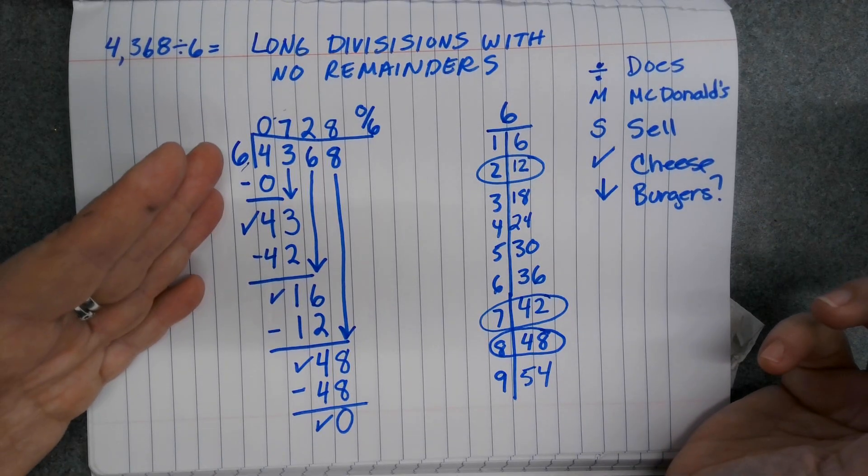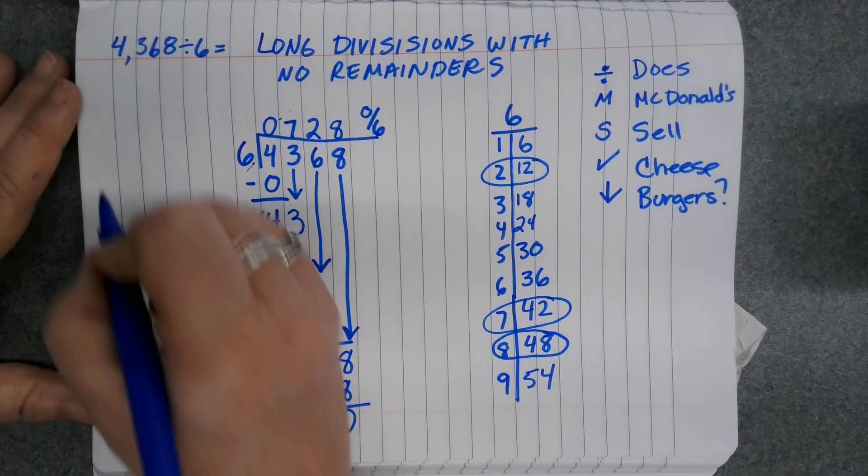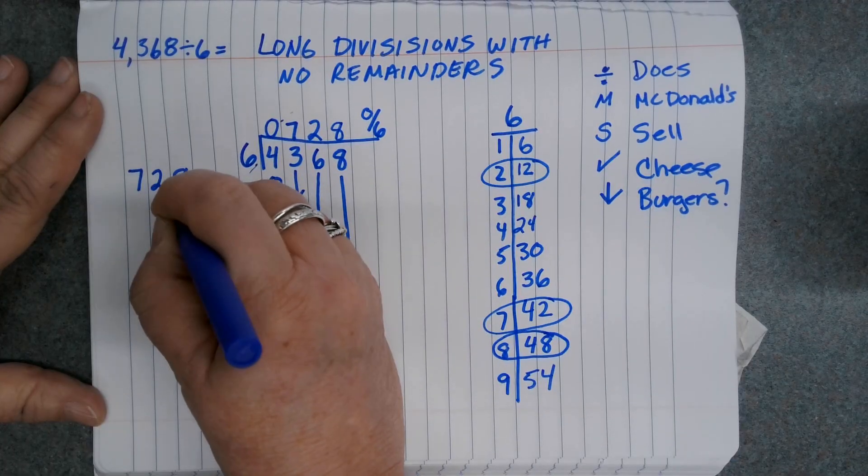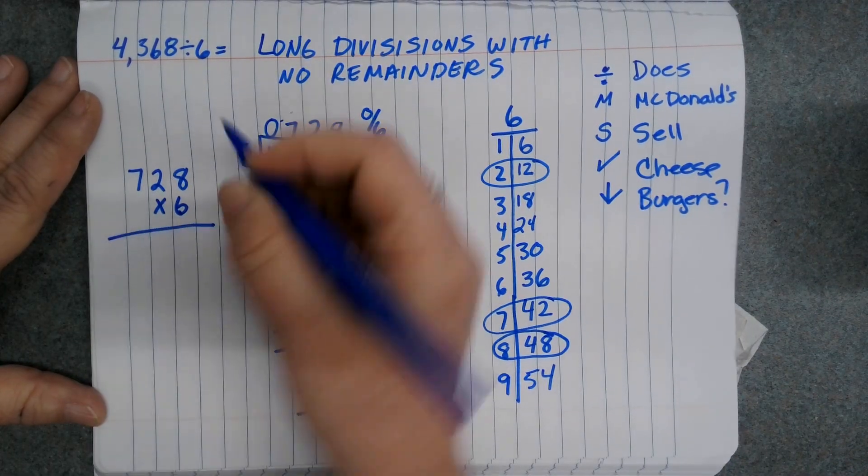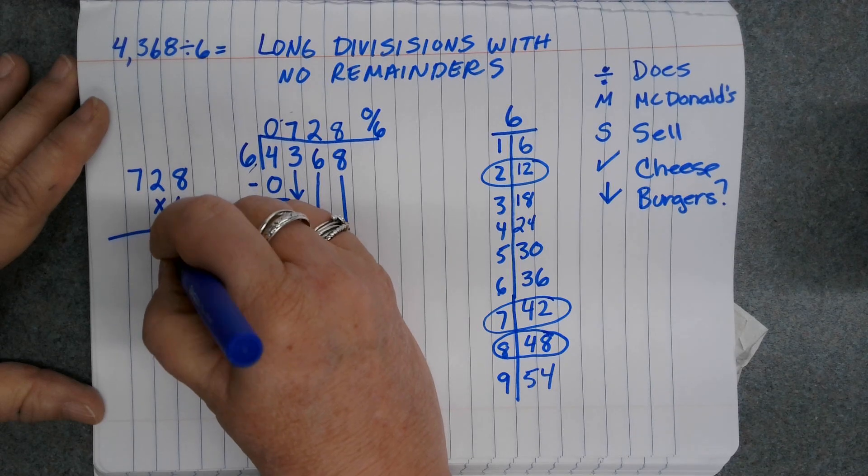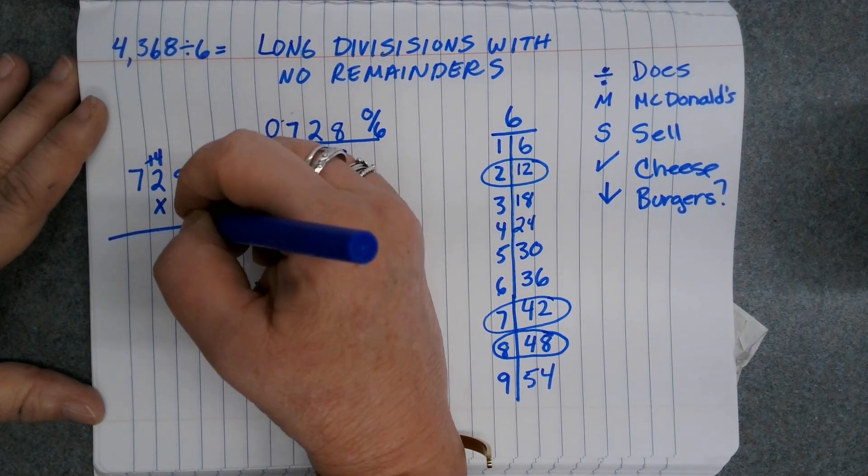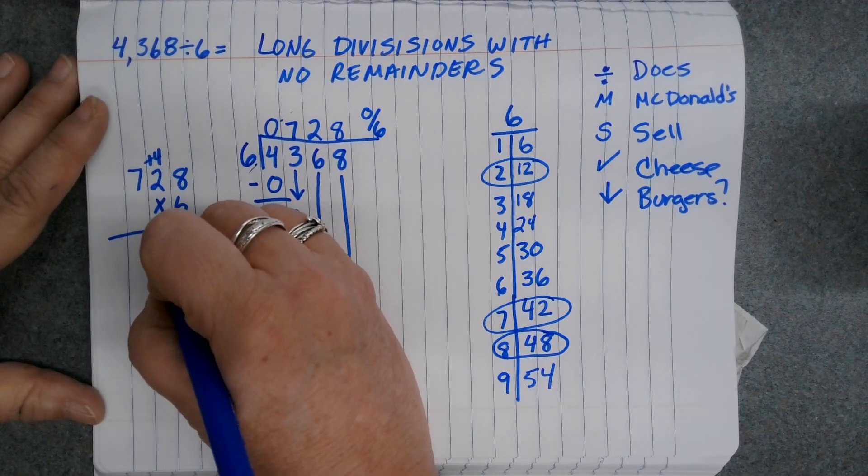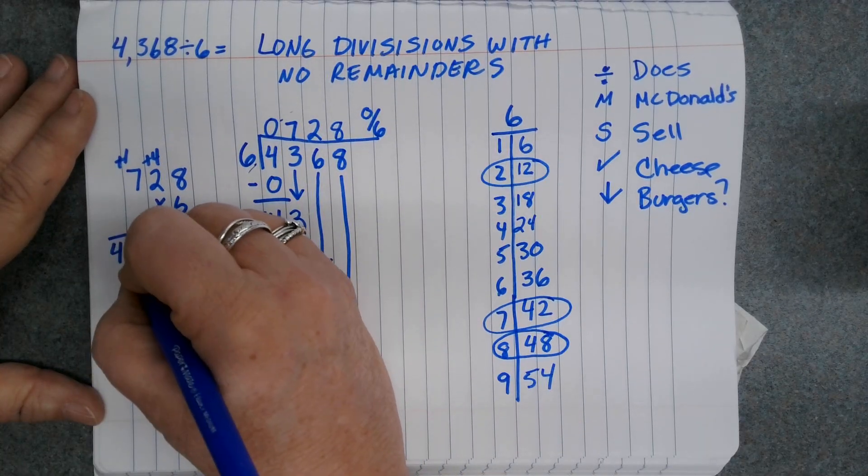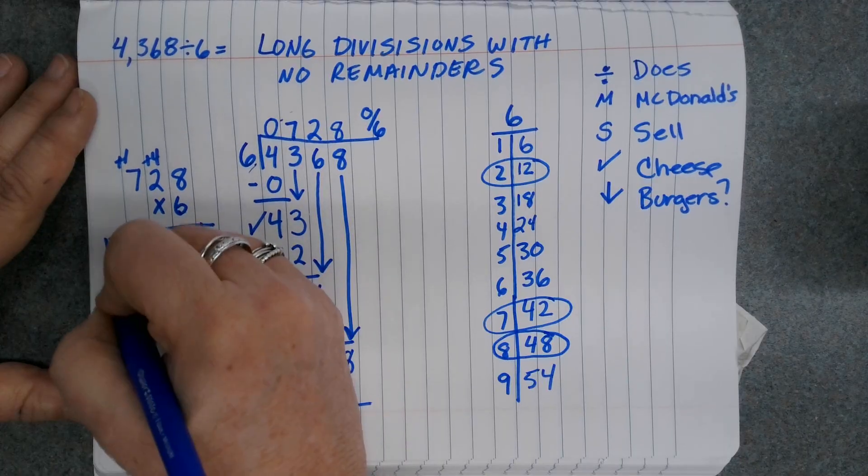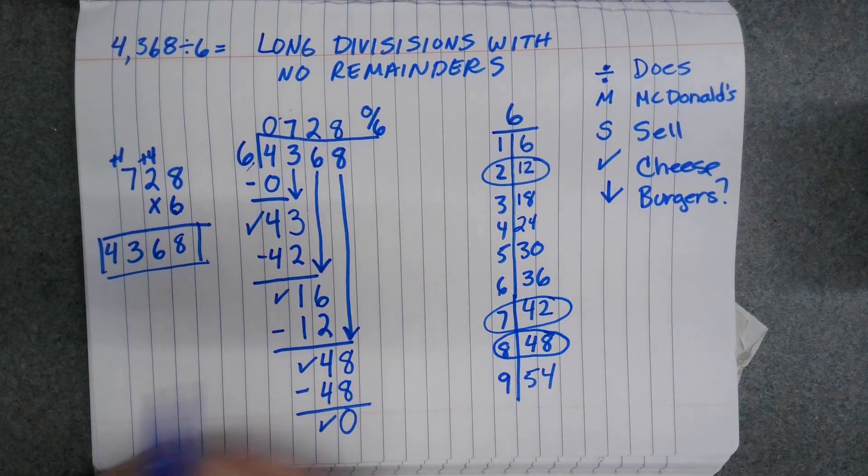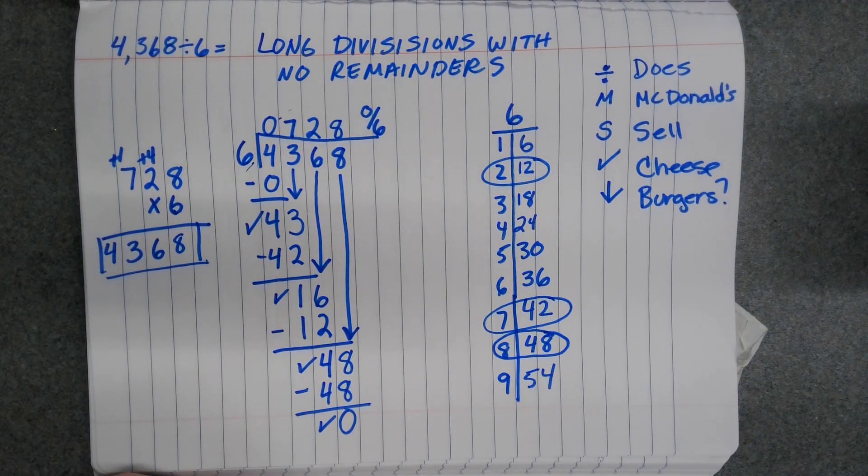After I'm done with my division problem, best practice is to multiply my answer by my divisor and see if I get the original number. So 6 times 8 is 48, regroup. 6 times 2 is 12, plus 4 more is 16, regroup. 6 times 7 is 42, plus 1 more is 43. My product matches my dividend, so I know my quotient is correct. I am good to go. Hope that helps. Have a great day.